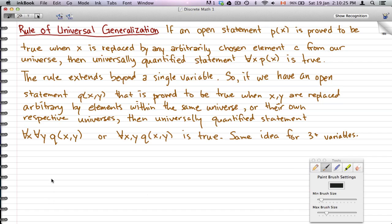then the universally quantified statement ∀x p(x) is true. This rule extends beyond a single variable, so if we have an open statement q(x,y) that is proved to be true when x,y are replaced arbitrarily by elements within the certain universe,